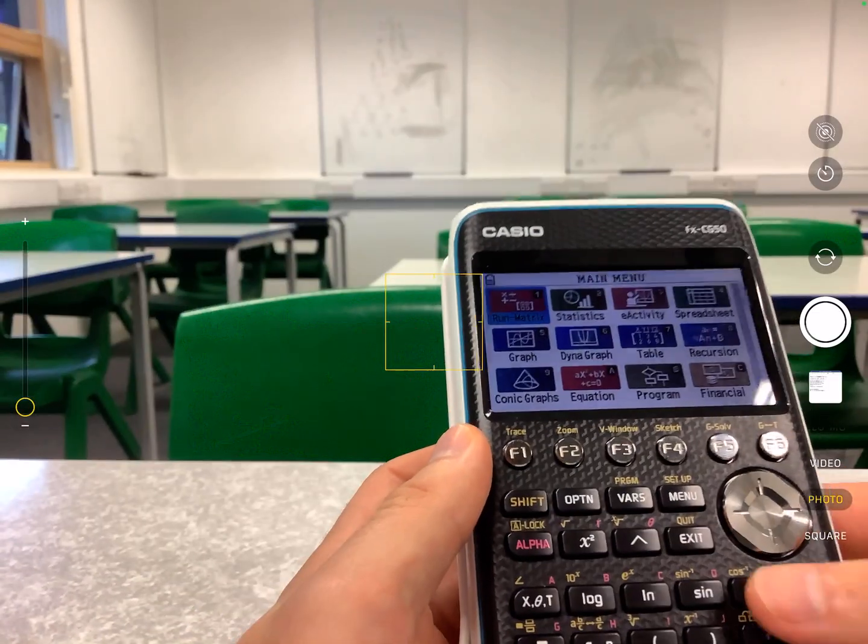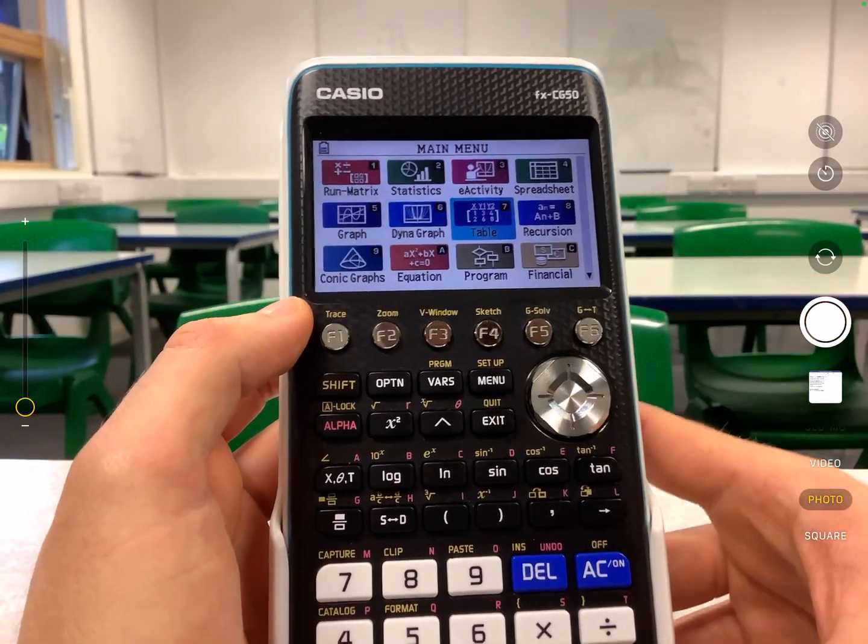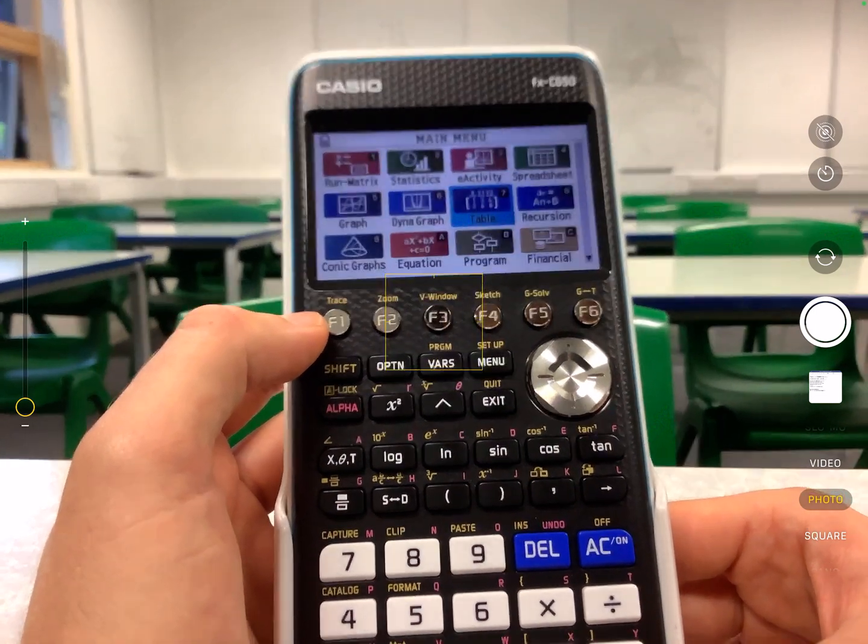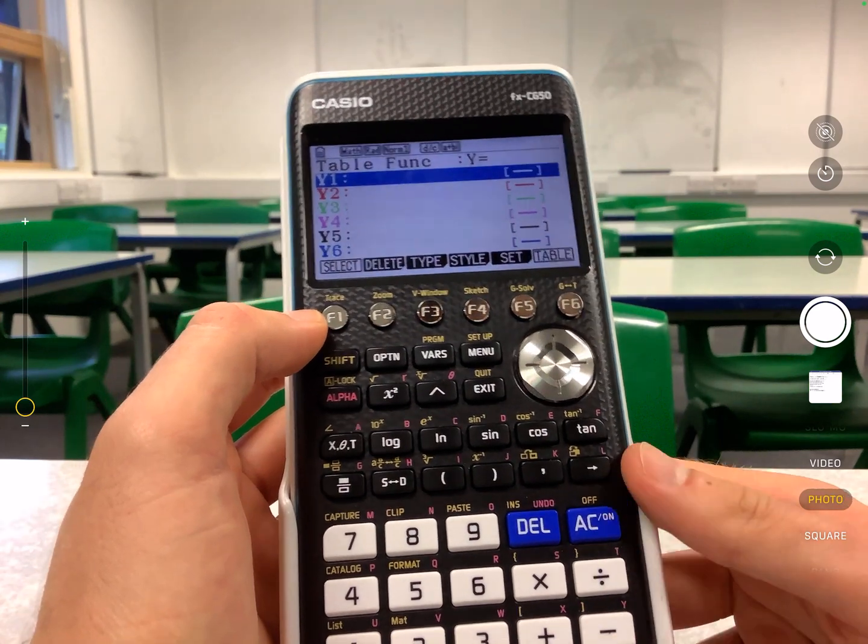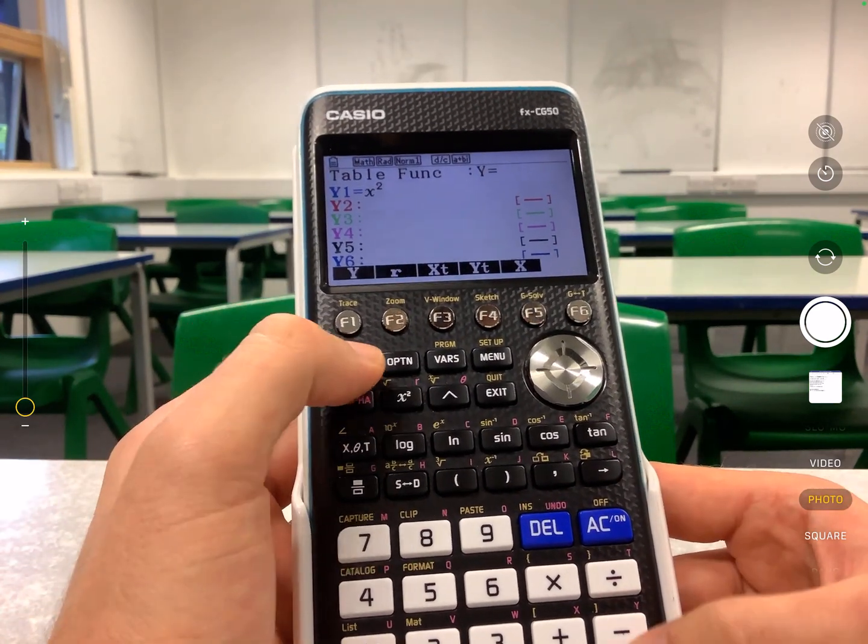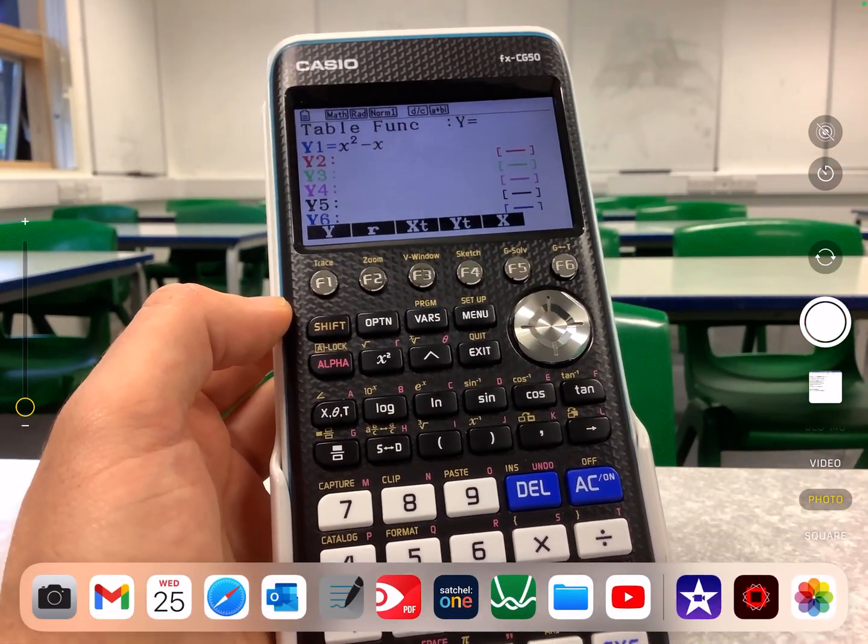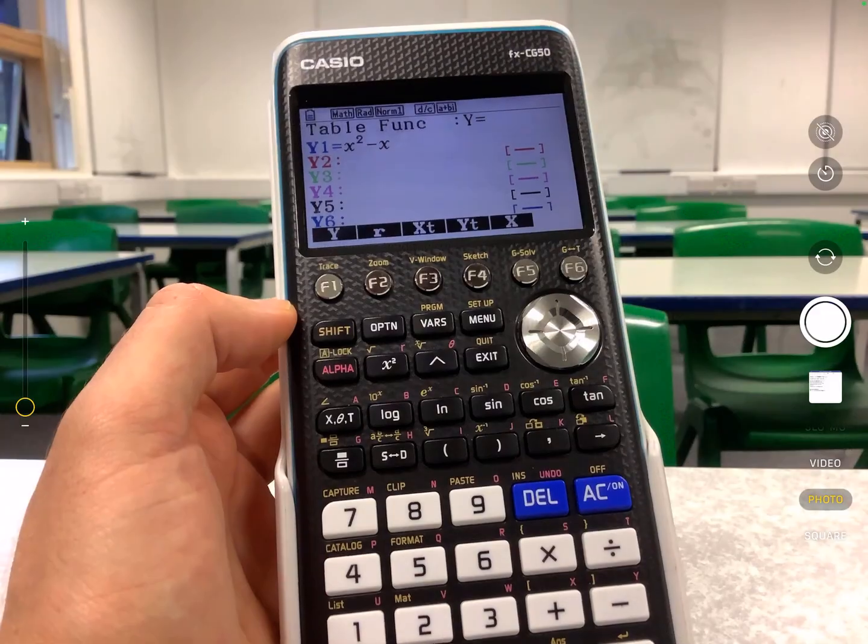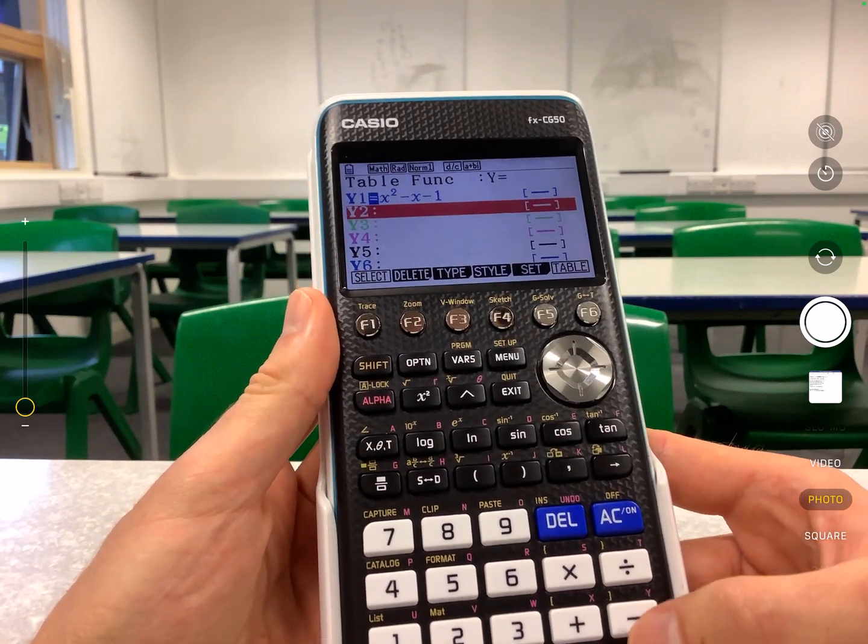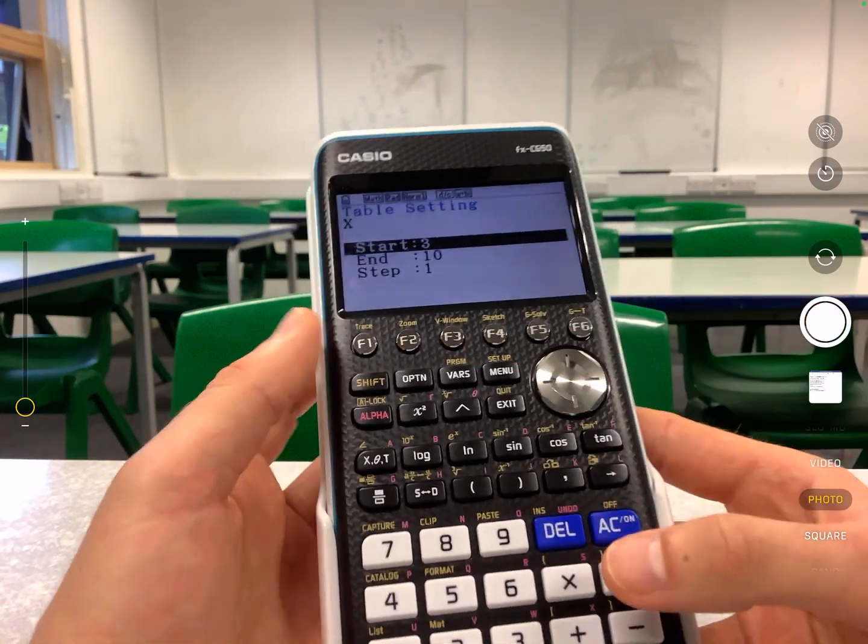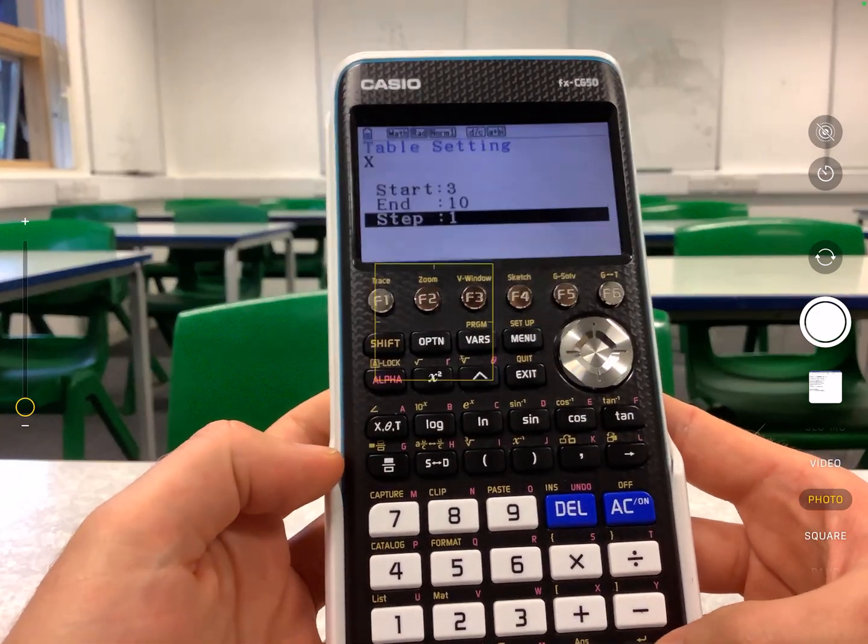So on my calculator here, and it works the same on your Classpad calculator, you're going to go to the table feature. The table feature is number seven on the graphics and number nine on the normal calculator, the Classwiz. I'm going to go in there and type in x² - x - 1. You then press equals. I'm going to set the values. I want it to start at three, finish at 10, and the step to be ones.